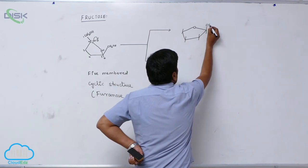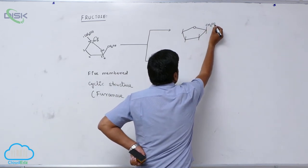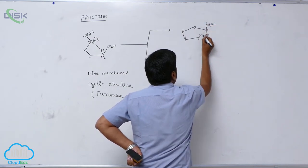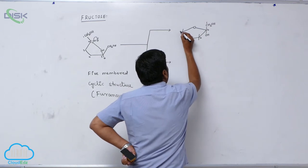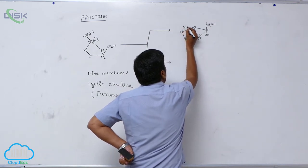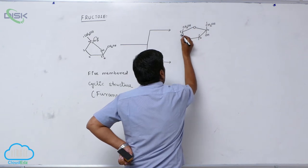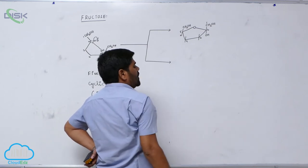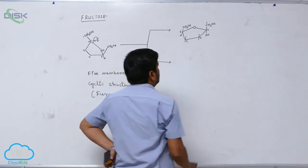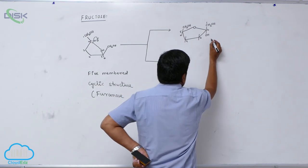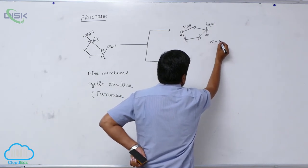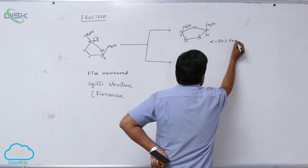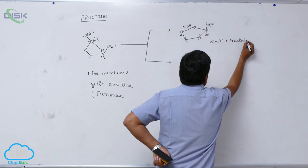Now, this is CH2OH. Erase OH, and number carbons 1, 2, 3, 4, 5. Erase CH2OH, then add hydrogen. If the second carbon OH is on the right side, this particular form is known as the alpha form. Therefore, this is alpha D-minus fructofuranose.